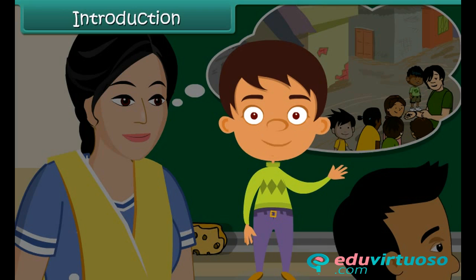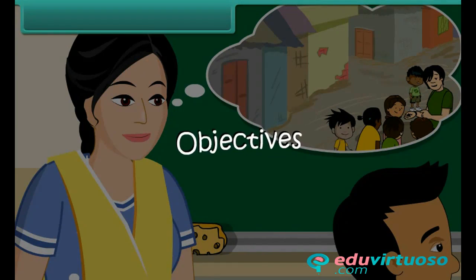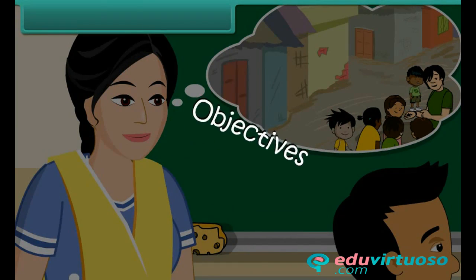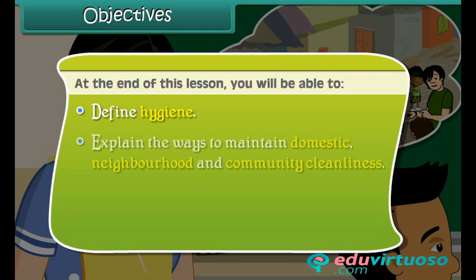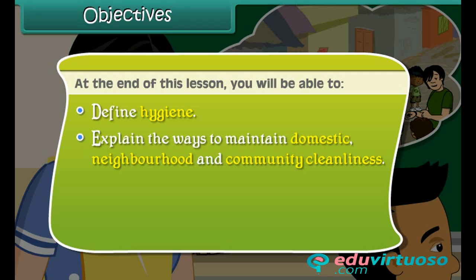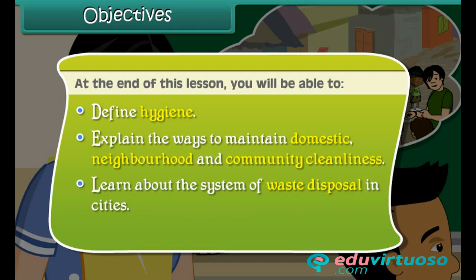Objectives: At the end of this lesson, you will be able to define hygiene, explain the ways to maintain domestic, neighborhood, and community cleanliness, learn about the system of waste disposal in cities, and list the three R's of waste management.